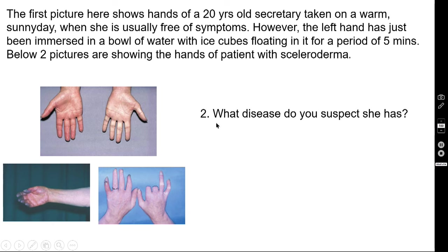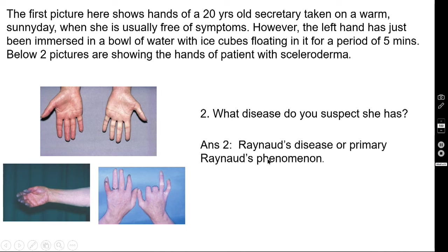Question two: what disease do you suspect she has? The correct answer is the patient has what is called Raynaud's disease, or primary Raynaud's phenomenon. There is no underlying associated disease — the exact cause is idiopathic.